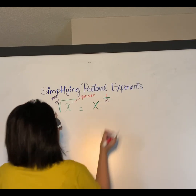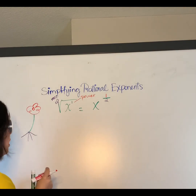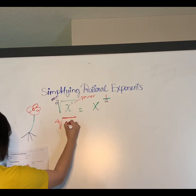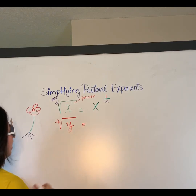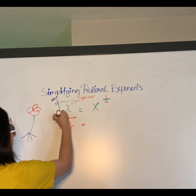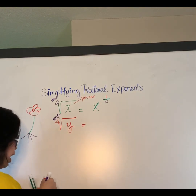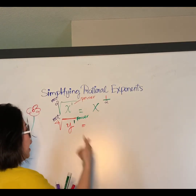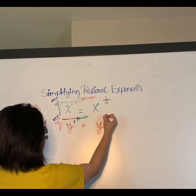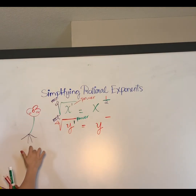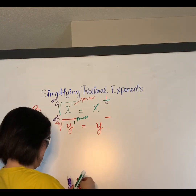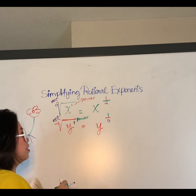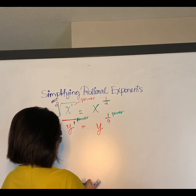Next example: the fourth root of y. Outside is the root, inside is the power. Since there's no written exponent on y, the power is one. We keep the base y and raise it to the power of one over four — power on top of the root.